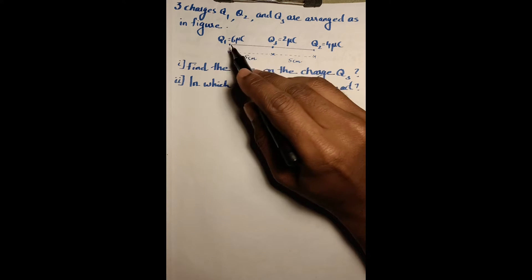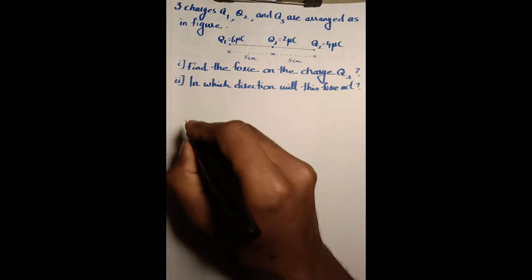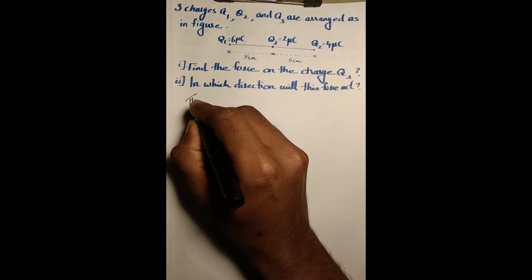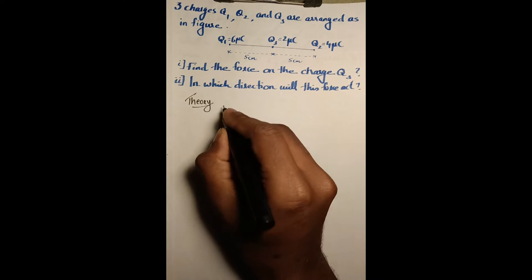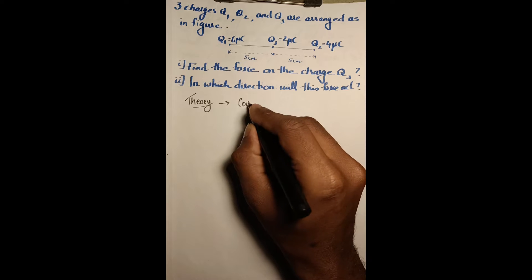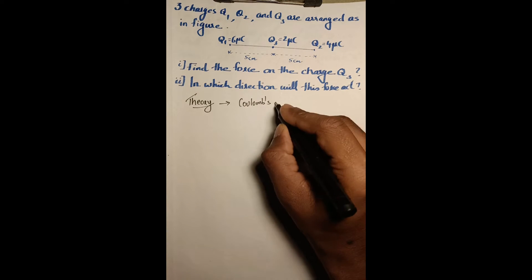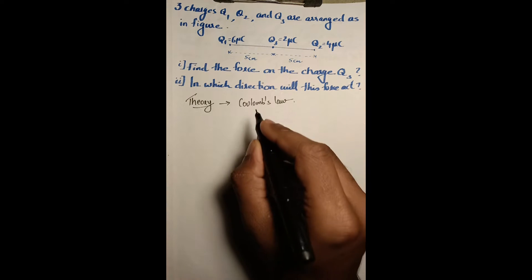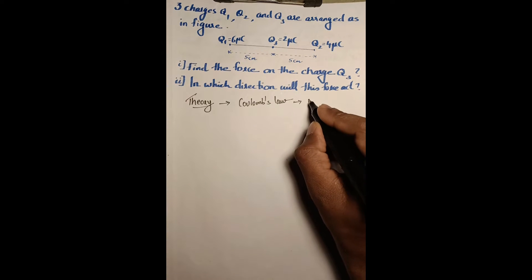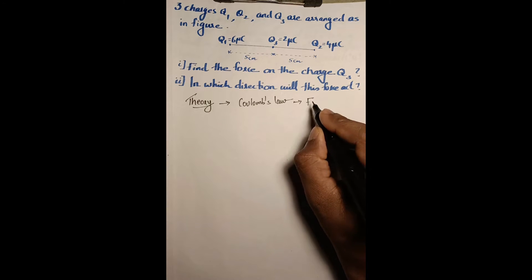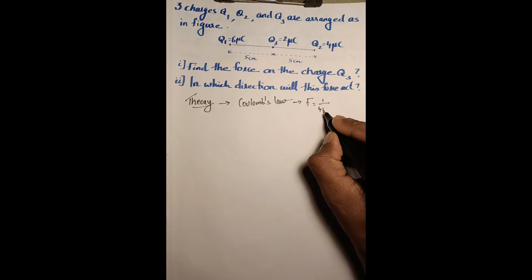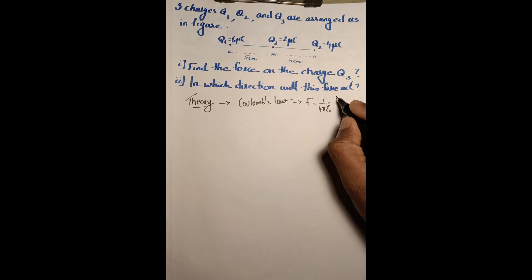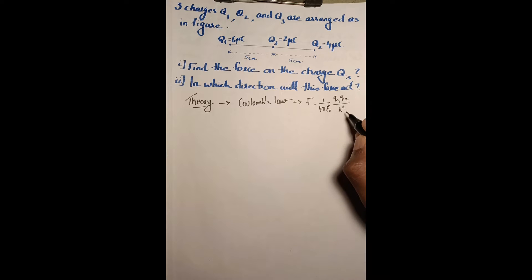To solve this question we will first discuss the theory, which is Coulomb's Law. According to Coulomb's Law, the electrostatic force between two charges is equal to 1 over 4 pi epsilon-zero, multiplied by the product of the two charges q1 and q2, divided by r squared — the square of the distance between them.